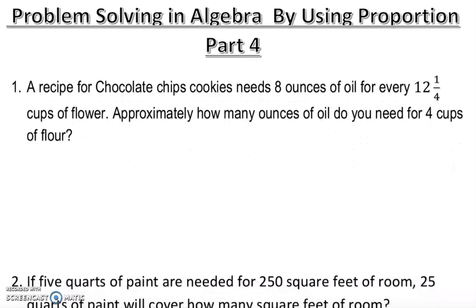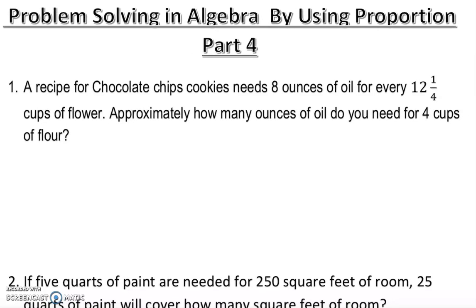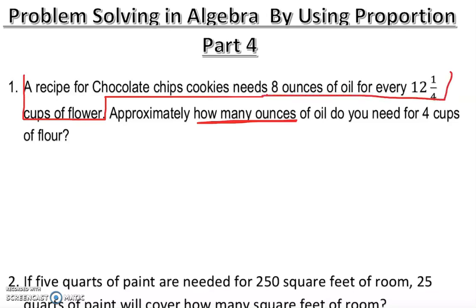The only thing we have to pay attention to is matching units on the numerator versus the denominator. Once you can do that, you can easily solve this kind of problem. So first thing — I'm going to read the problem and read it until you know what is unknown. A recipe for chocolate chip cookies needs eight ounces of oil for every twelve and one-quarter cups of flour. Approximately how many ounces do we need for four cups of flour? So the unknown is the ounces.